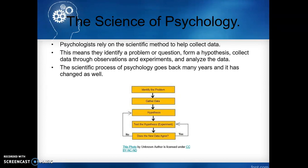The science of psychology: psychologists rely on the scientific method to help collect data. This means they identify a problem or a question, then form a hypothesis, collect data through observations and experiments, and then analyze that data. We use this process across sciences — biology, chemistry, and all types of sciences. The scientific process of psychology goes back many years and has also changed over time.